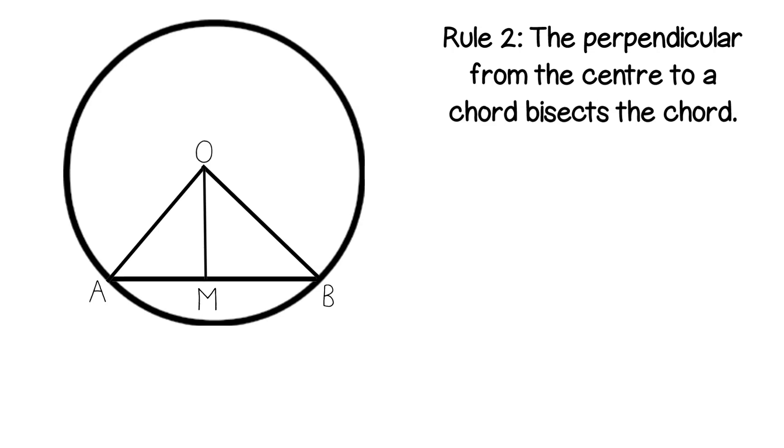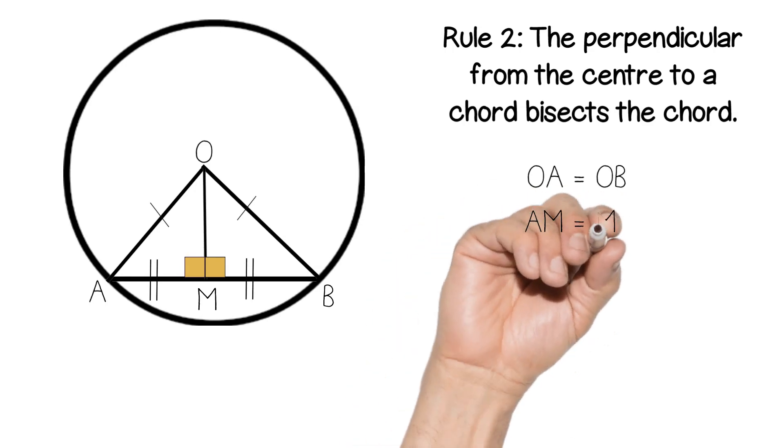So OMB is 90 degrees so I can do a little symbol there but also OMA. The other parts of this shape that we can see is that we have two radii. So O to A and O to B are the same. So I can put my little arc symbols into there. And finally if M is cutting AB in half A to M has to be the same as M to B. So I'm also going to do some arcs there. Note that I've got a double arc there and the reason I've done that is so that you know that A to M and M to B match and then A to O and O to B match. So don't do single arcs for all of them otherwise you're saying they're all the same which they're not.